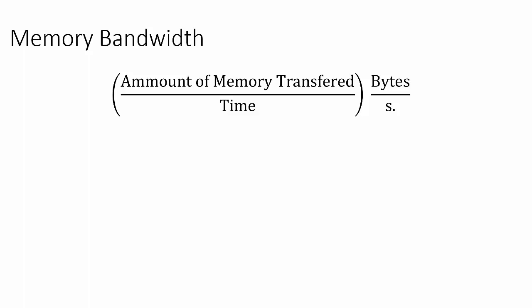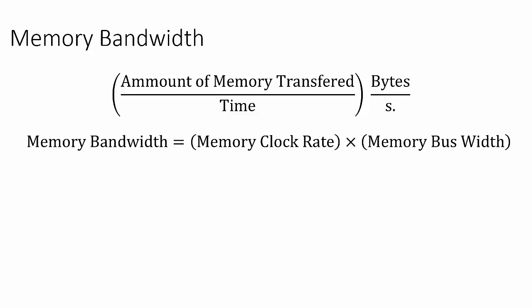Memory bandwidth is simply defined as the amount of memory transferred for a given amount of time. We can compute memory bandwidth by multiplying the global memory clock rate with the memory bus width.